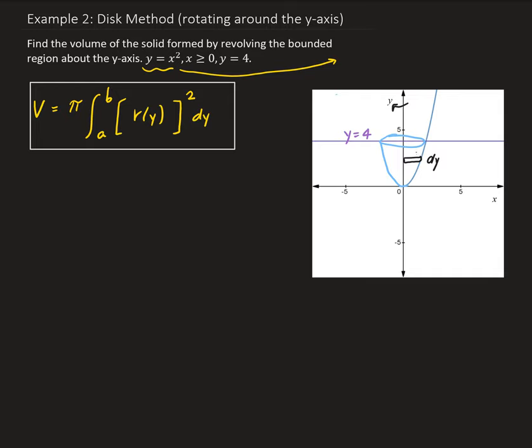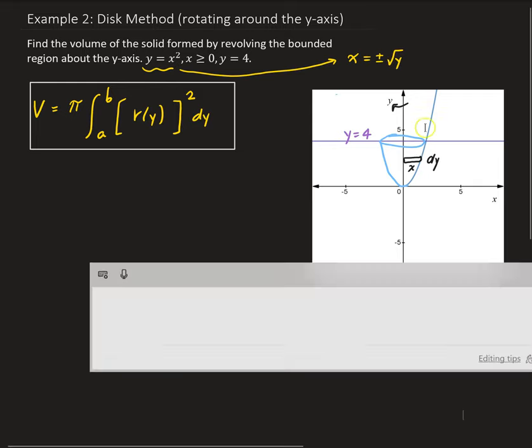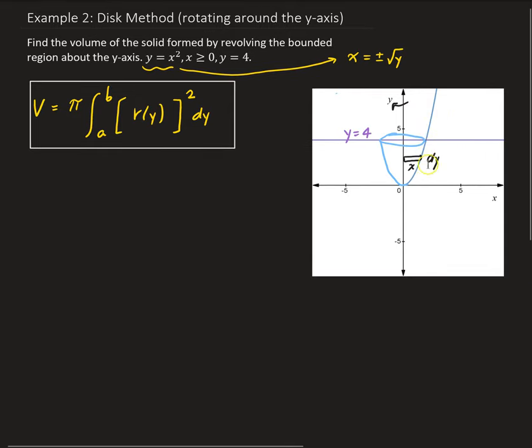Remember this is acting as a distance. x is the distance from the axis of revolution to the point on the curve. So x is going to be equal to, we want to get x in terms of y, so this is going to be equal to plus or minus the square root of y. However, we're only dealing with the positive square root of y, only this part, not the negative part. So r of y is going to be equal to square root of y.